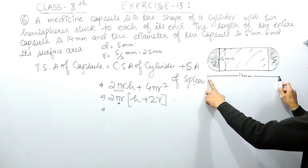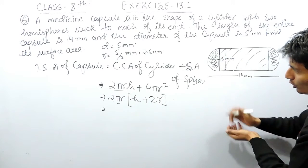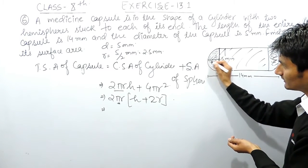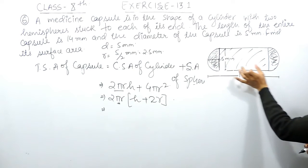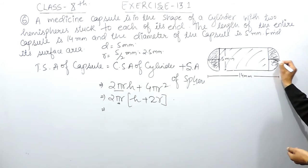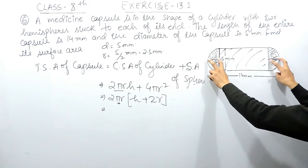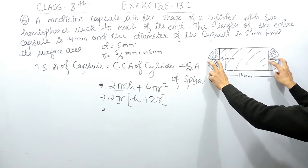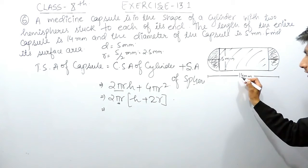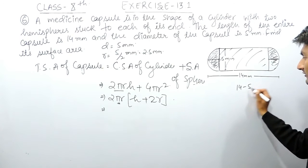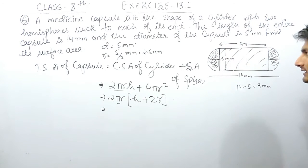The complete length of the capsule is 14 millimeters. The radius of each hemisphere is 2.5 millimeters, so both hemispheres together account for 2.5 + 2.5 = 5 millimeters. Subtracting 5 from 14, the height of the cylinder is 9 millimeters.